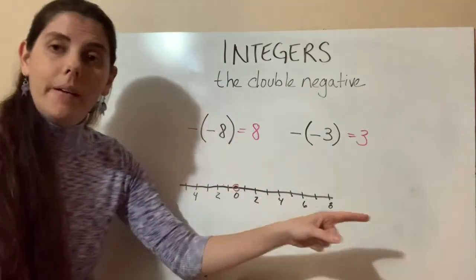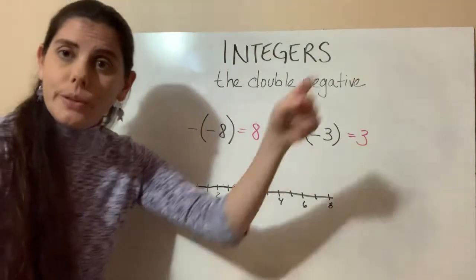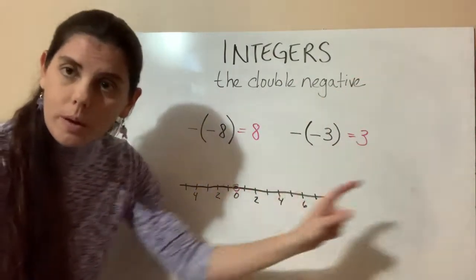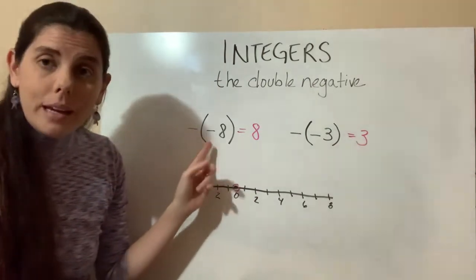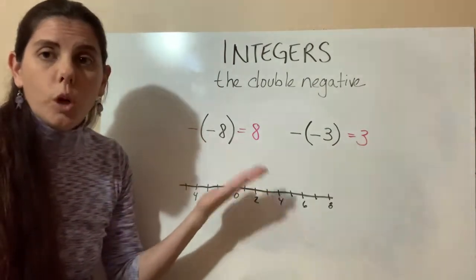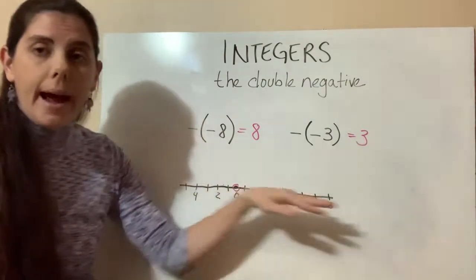We always count up. When we teach our kids to count, we go one, two, three. We start with the zero and we work our way to the right on the number line. That's our natural way.